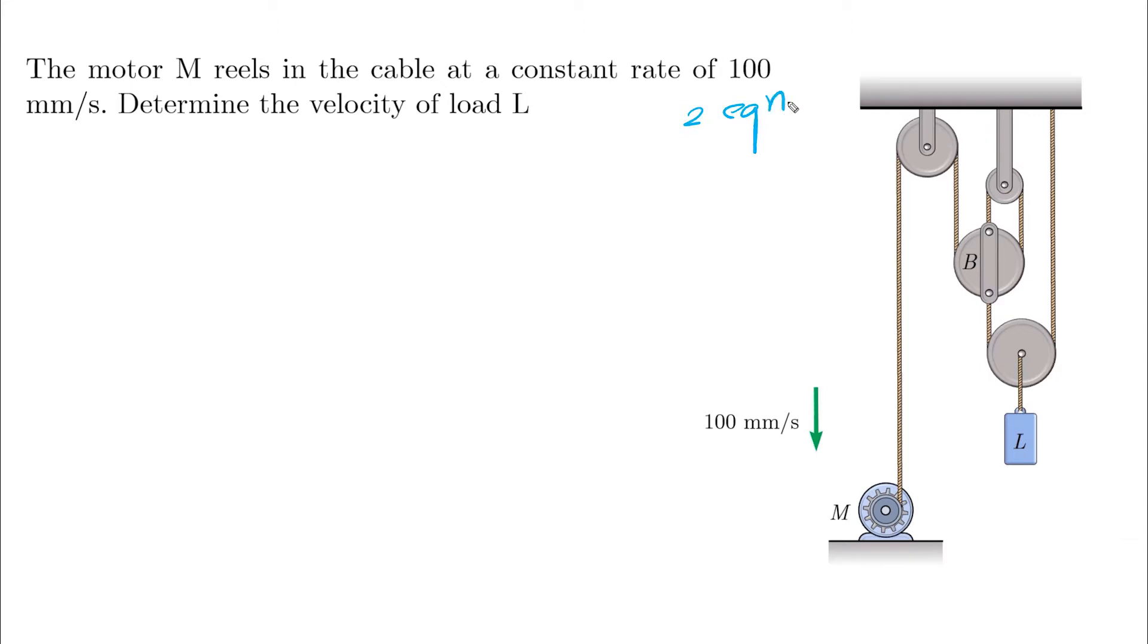The second one is we have a motor withdrawing a cable, which means that the velocity of the motor can be represented by a point on the cable.